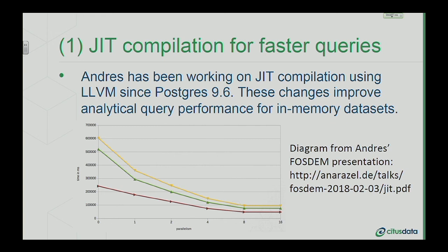The way you read this graph: if your workload fits into memory, these JIT changes improve performance by 2 to 3x for free.